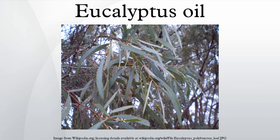Eucalyptus oil is used in flavoring. Cineol-based eucalyptus oil is used as a flavoring at low levels in various products, including baked goods, confectionery, meat products, and beverages. Eucalyptus oil has antimicrobial activity against a broad range of food-borne human pathogens and food spoilage microorganisms. Non-cineol peppermint gum, strawberry gum, and lemon ironbark are also used as flavoring.